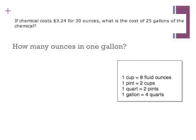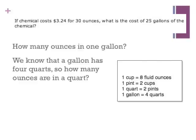How many ounces are in 1 gallon? Well, from the FCAT reference sheet conversion table, we know that a gallon has 4 quarts. So how many ounces are in a quart?